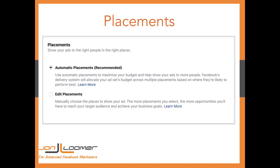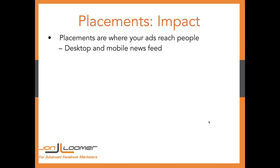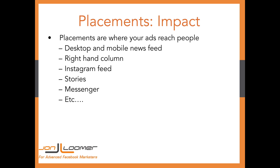This is where you decide whether or not you trust Facebook and how they distribute your ads. Some placements are obviously going to be more effective than others, but you can edit and decide you only want to show your ads in specific places. Placements are where your ads reach people — things like desktop and mobile news feed, right-hand column, Instagram feed, stories, messenger, and so on.